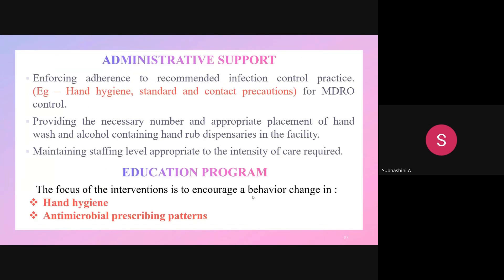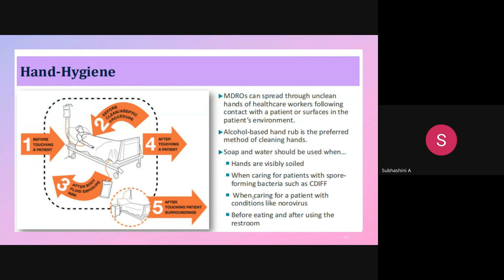Administrative support includes proper recommendations of hand hygiene precautions. Standard and contact precautions should be followed. Education programs should address proper hand hygiene techniques and proper antimicrobial prescribing patterns for healthcare facilities. The five key moments for hand hygiene are: before an aseptic procedure, after an aseptic procedure, before touching a patient, after touching a patient, and after contact with the patient's surroundings.